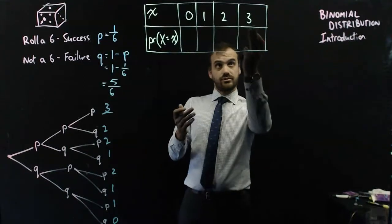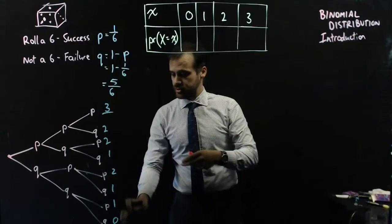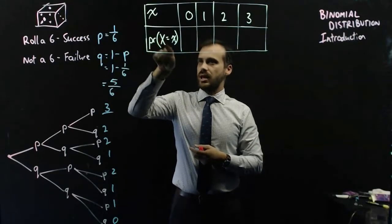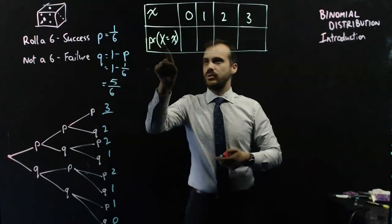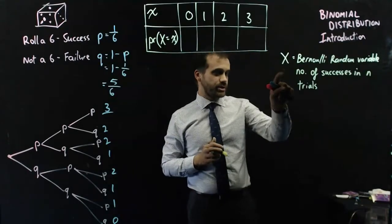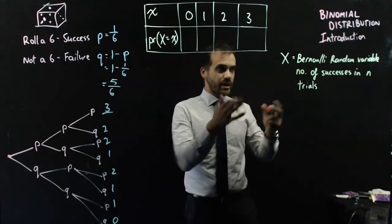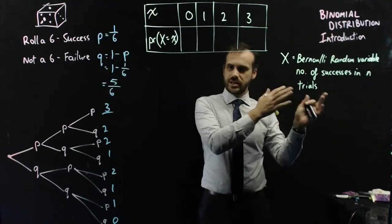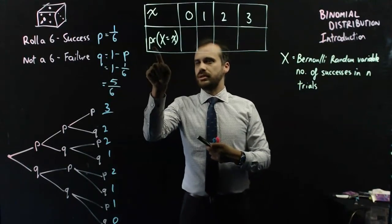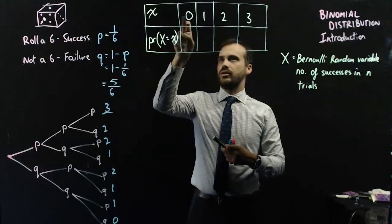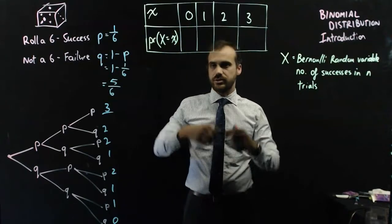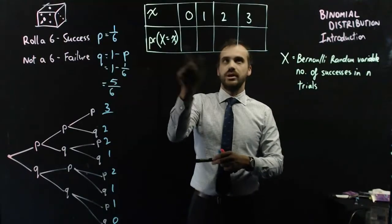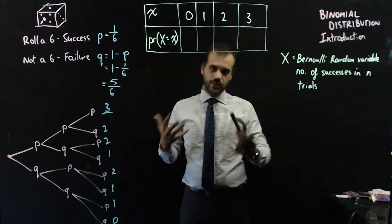This thing here says the probability that X is equal to x. What does this capital X represent? The capital X represents a Bernoulli random variable, and that is the number of successes in n trials. In this case, that says the probability that you got this many in 3 trials. So, the probability that you got 0, the probability that you got 1, the probability that you got 2, the probability that you got 3. How do we figure out that probability?